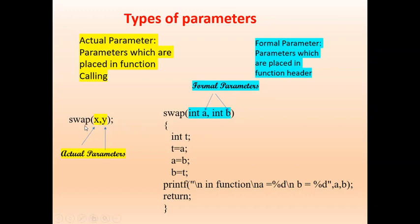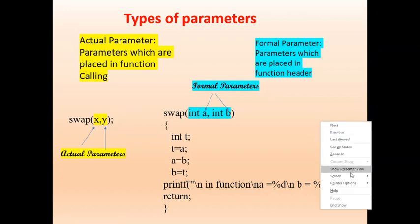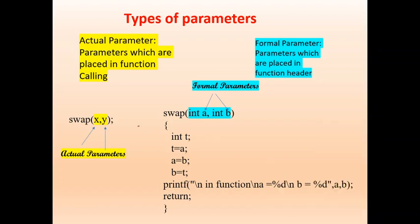Whenever a function call is made, these formal parameters get replaced by actual parameters. Here, the formal parameter b gets replaced by y, and a gets replaced by x. It is a 1-to-1 ratio in the same order. The first formal parameter gets replaced by the first actual parameter, and the second formal parameter gets replaced by the second actual parameter, and so on.